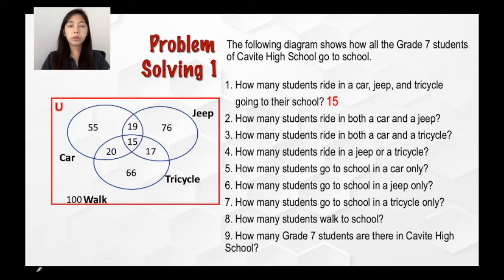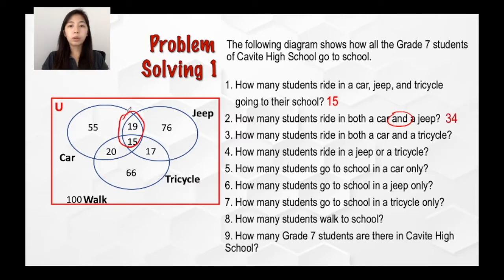For the second question, how many students ride in both a car and a ship? For this one, it still made use of this word, so meaning it is still under the intersection. But this time, you're going to look at two sets only. So look into the intersection of car and ship, which is located here. So that means that you're going to add the two numbers. So there are 34 students who ride in both a car and a ship.